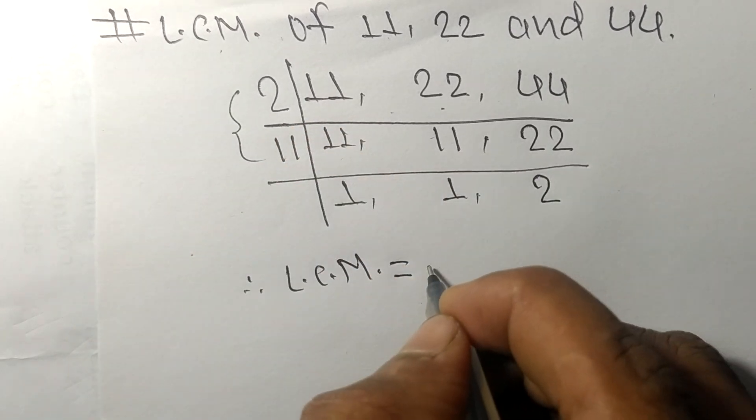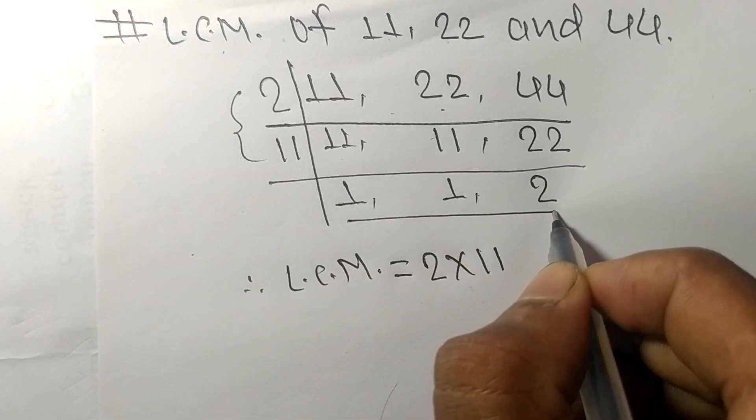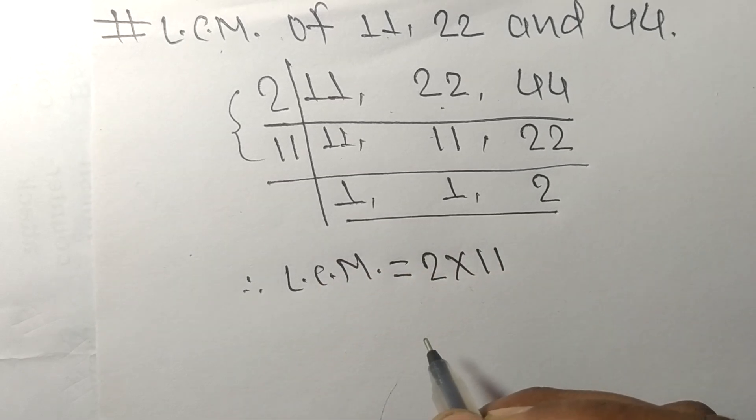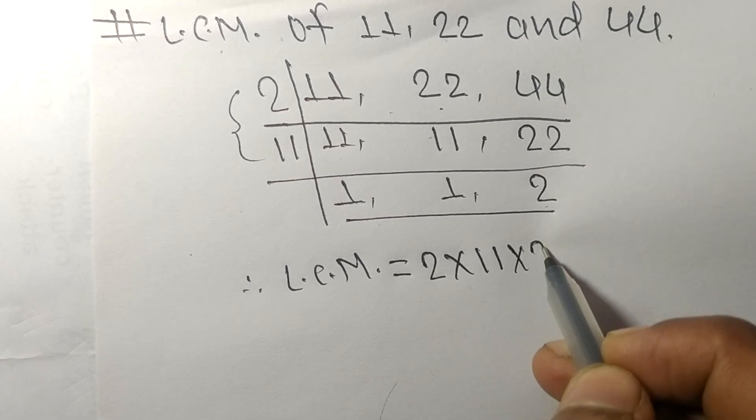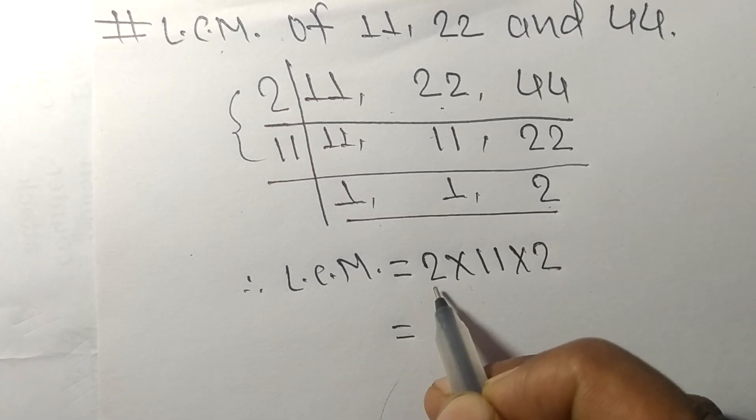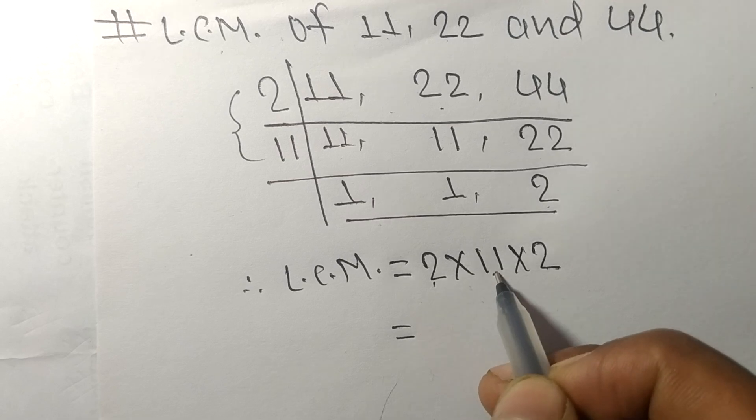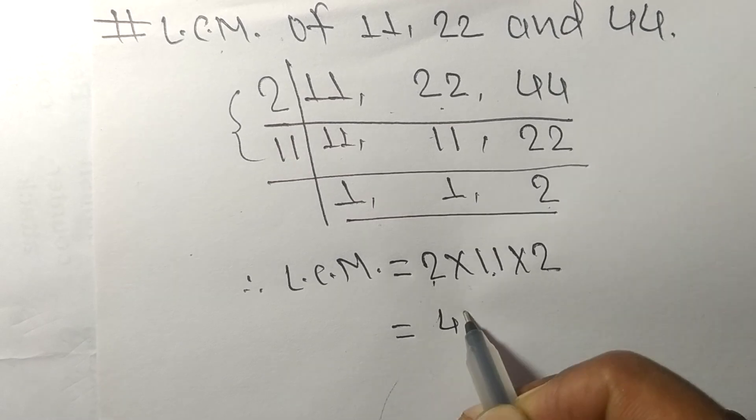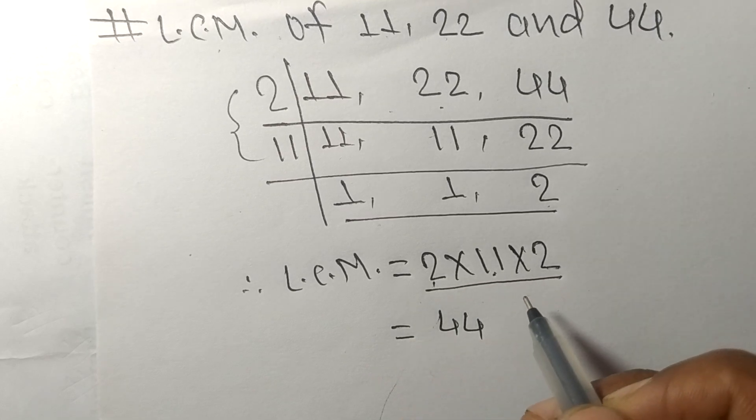Therefore its LCM is equal to, from this side it is 2 and 11. From this side we choose the numbers greater than 1, that is 2. So 2 times 11 equals 22, 22 times 2 equals 44. So by multiplying all these numbers we got 44.